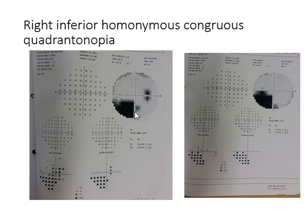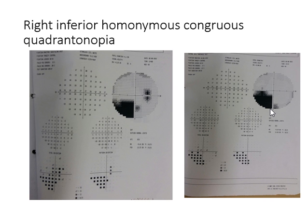This is another field defect. You can see a right inferior temporal field effect along with a left inferior nasal field effect. Again, this respects the vertical midline, so it is a neurological field effect. It is homonymous because it is temporal on one side and nasal on the other. This is right inferior homonymous quadrantanopia. The pathology is on the contralateral parietal lobe, that is the left parietal lobe. This is also called the 'pie on the floor' field effect — the person will not be able to see in the inferior field of vision.